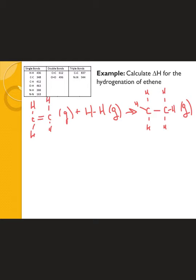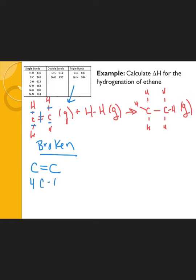I've added the hydrogens so we can see the carbon-hydrogen bonds more clearly, and everything has to be in the gas phase. Now I want to go through and make a list of all the bonds broken and all the bonds formed. On the reactant side, we have one C=C double bond, four C–H bonds, and one H–H bond.